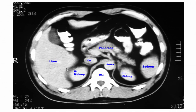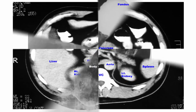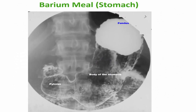Again, this is a CT of the abdomen at a different level, showing the spleen, the left kidney, right kidney, vertebral column, aorta, inferior vena cava, the pancreas, and the liver also occupying the right side.